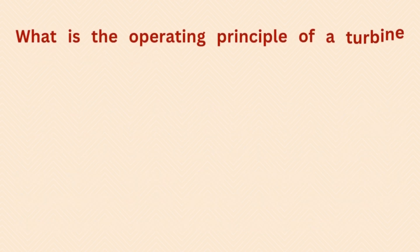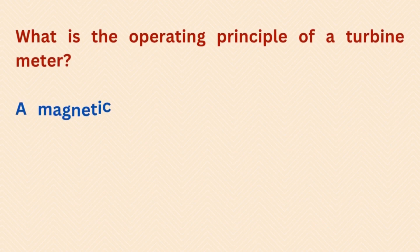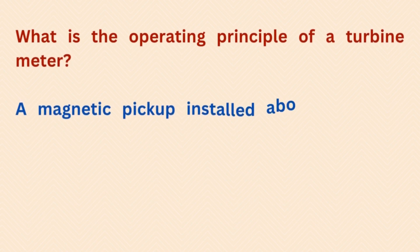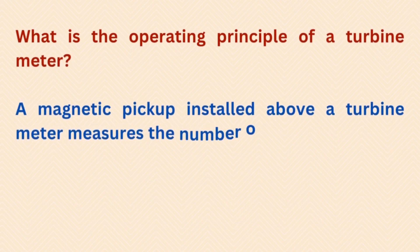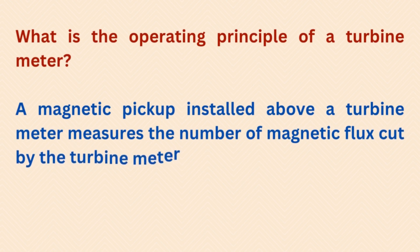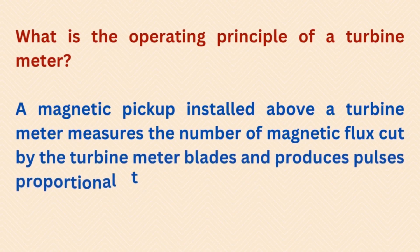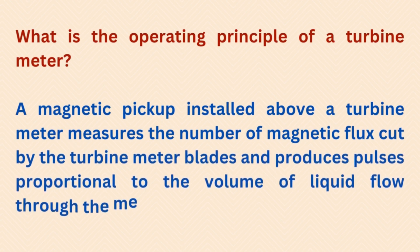What is the operating principle of a turbine meter? A magnetic pickup installed above a turbine meter measures the number of magnetic flux cuts by the turbine meter blades and produces pulses proportional to the volume of liquid flowing through the meter.